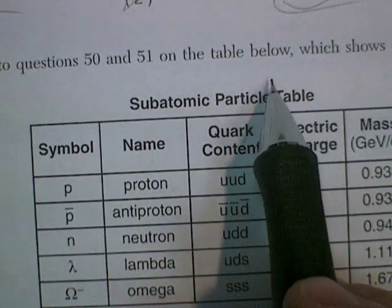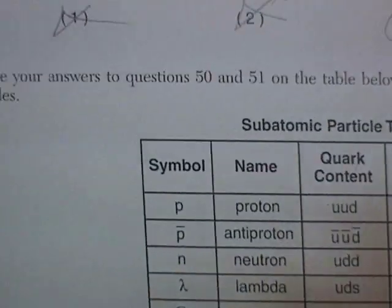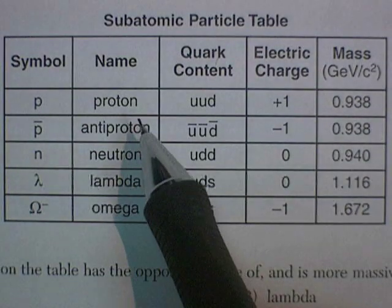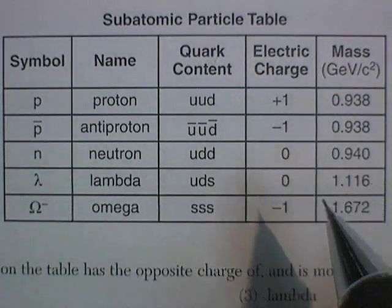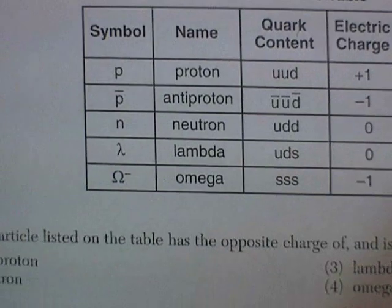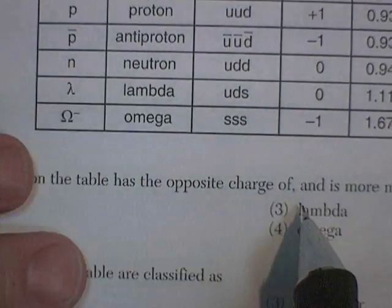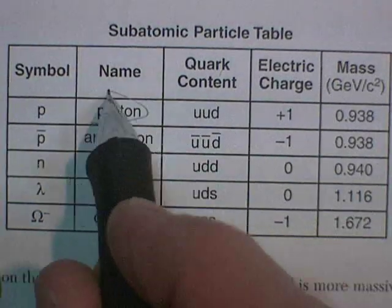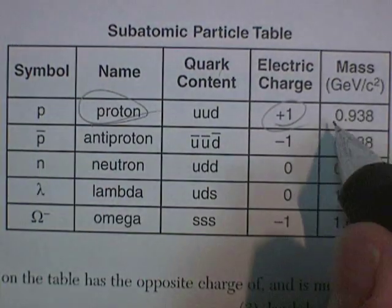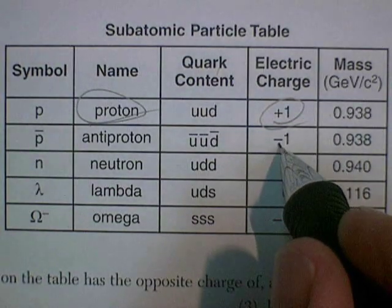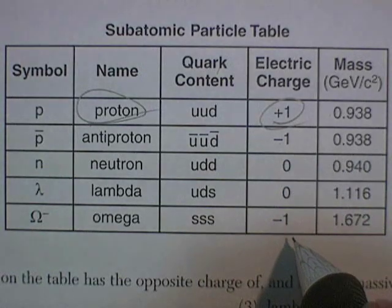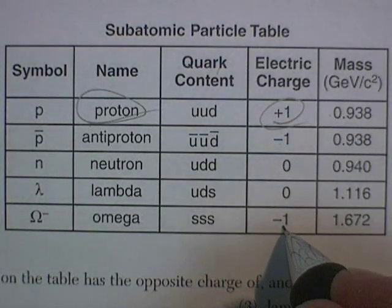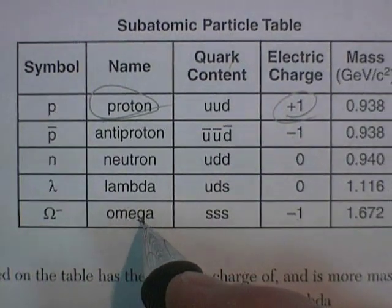Base your answers to Questions 50 and 51 on the table below, which shows data about various subatomic particles. Which particle listed on the table has the opposite charge of and is more massive than a proton? Here's a proton — it's positively charged, and here's the mass. The anti-proton is negatively charged, but it's the same mass. So we come down to this omega particle, which is made up of three strange quarks. It's negatively charged — opposite — and more massive. So the correct answer has to be the omega.